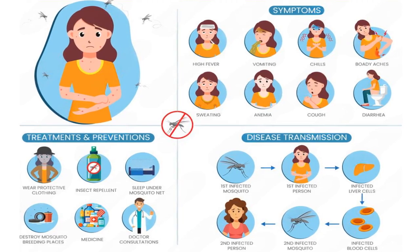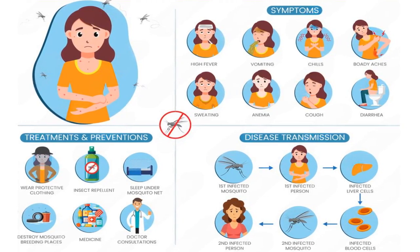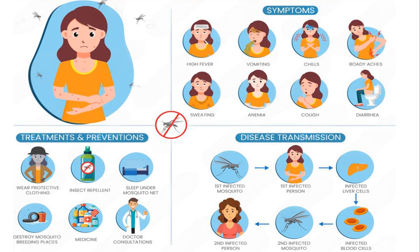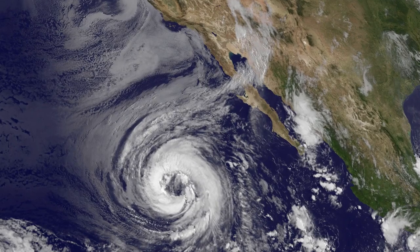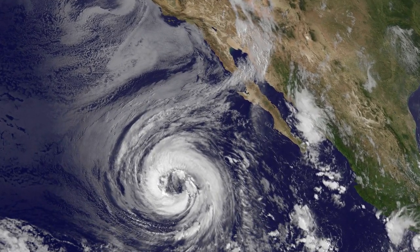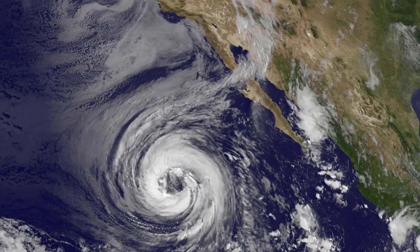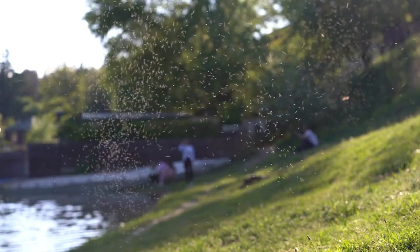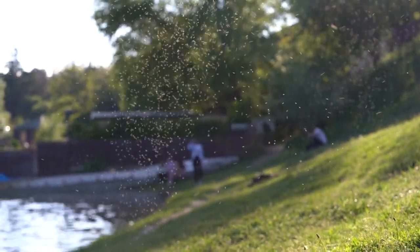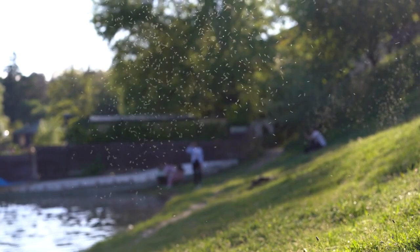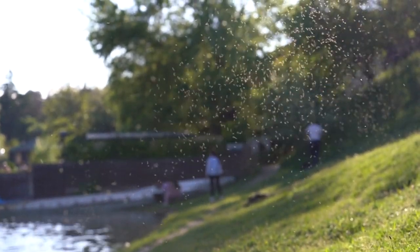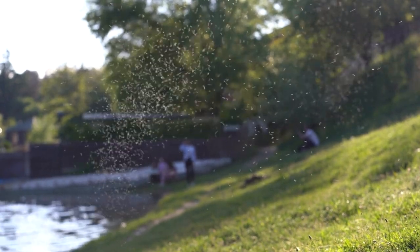Number 17. Can malaria be spread from person to person? No, malaria cannot spread directly between people. It requires a mosquito vector or specific conditions like contaminated needles or blood transfusion. Number 18. How does climate change impact malaria? Climate change can impact malaria by altering the habitats of Anopheles mosquitoes, which are the vectors of the disease. Rising temperatures, increased rainfall, and changes in humidity can expand mosquito breeding areas into regions that were previously too cold or dry, increasing the spread of malaria to new areas and potentially putting more people at risk.